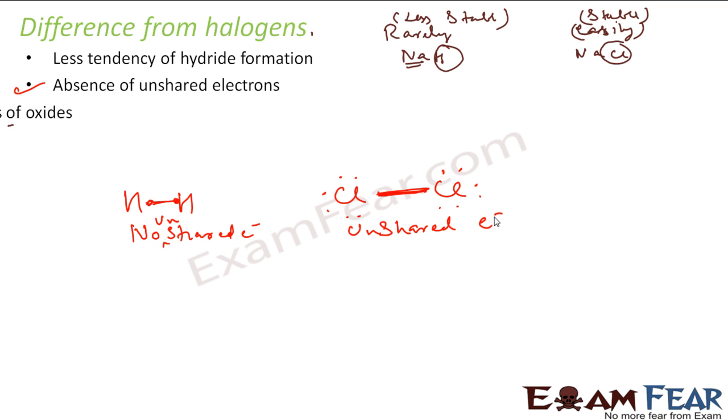The next is the nature of oxides. So if you see the nature of oxides for halogen and for hydrogen, for halogen it is acidic, for hydrogen it is neutral. So for example, oxide with hydrogen is water and oxide with halogen will be Cl2O7. This is acidic, this is neutral. So the nature of oxide is different for halogen and for hydrogen.